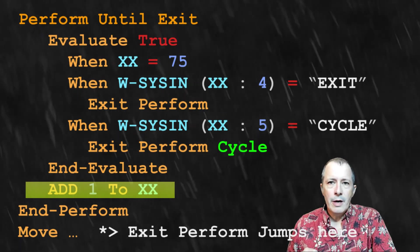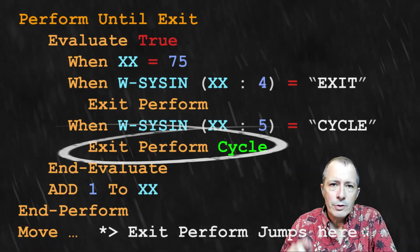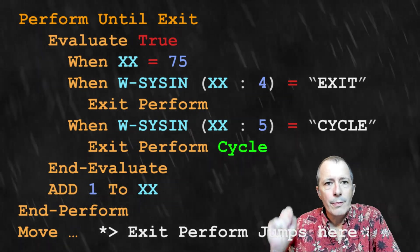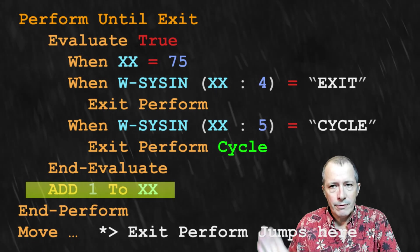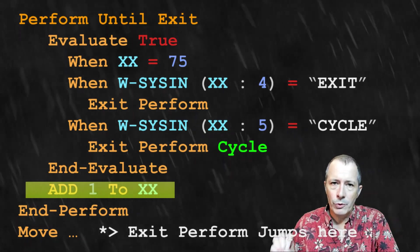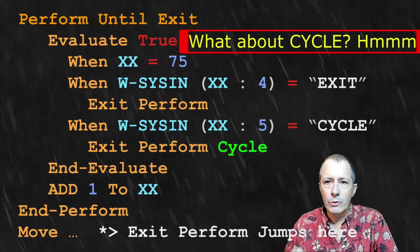During the intro, it was stated that the exit perform cycle requires some caution. That is because in this version of the loop, an infinite loop is created when the record contains the word cycle.